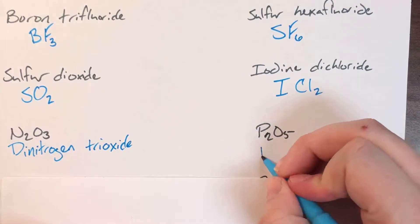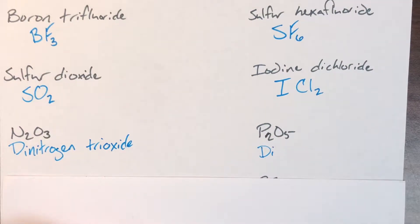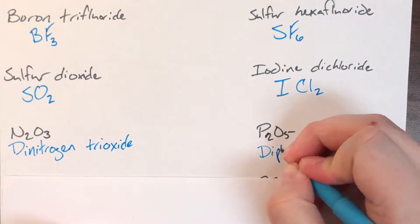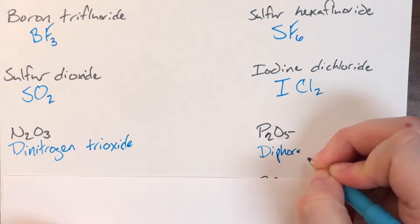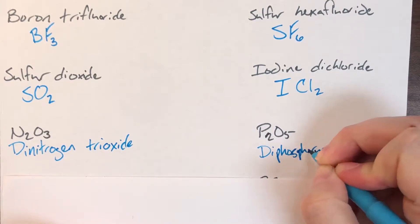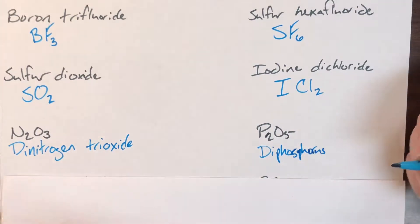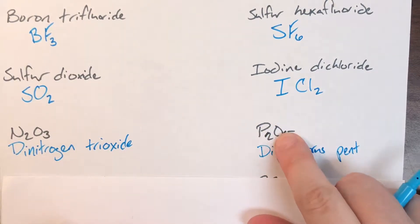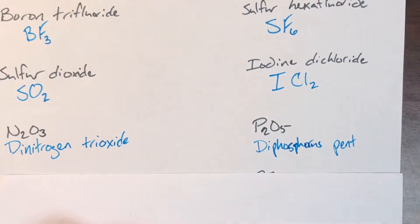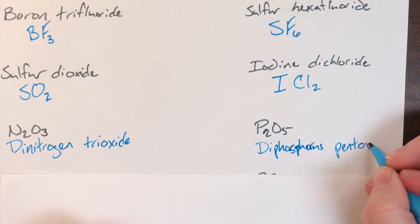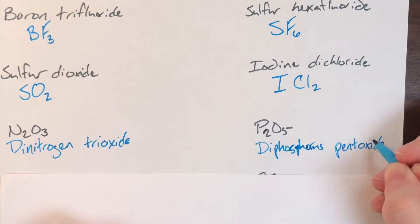For P2O5, the subscript of 2 gives the prefix di. P is phosphorus, and since it comes first, we keep the name phosphorus. The subscript of 5 gives the prefix penta, but since oxide starts with a vowel, we drop the final A and write pentoxide. So P2O5 is diphosphorus pentoxide.